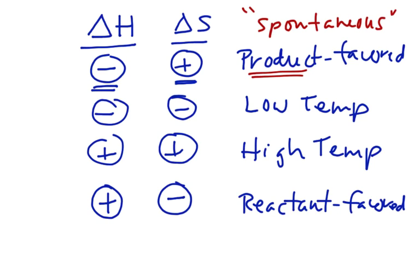If delta H is negative and delta S is positive, those two driving forces will cause a reaction to happen. For example, burning something: it gives off energy, it's exothermic, and things generally get more random — like a piece of wood turning into carbon dioxide and water. That reaction gets more random and gives off energy, so both driving forces say go forward, and it happens.